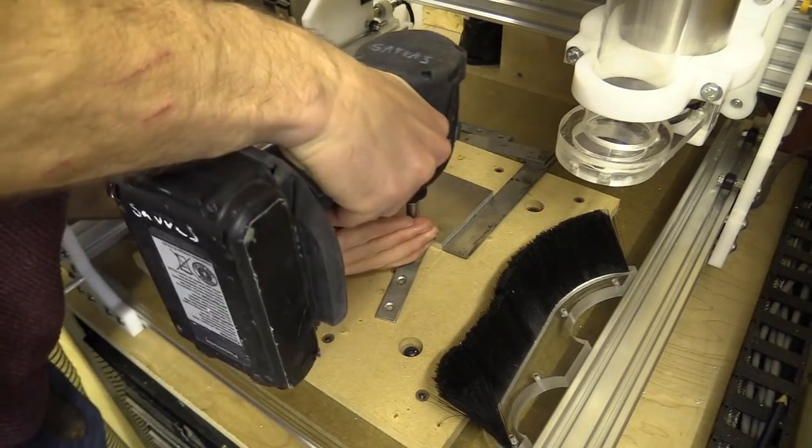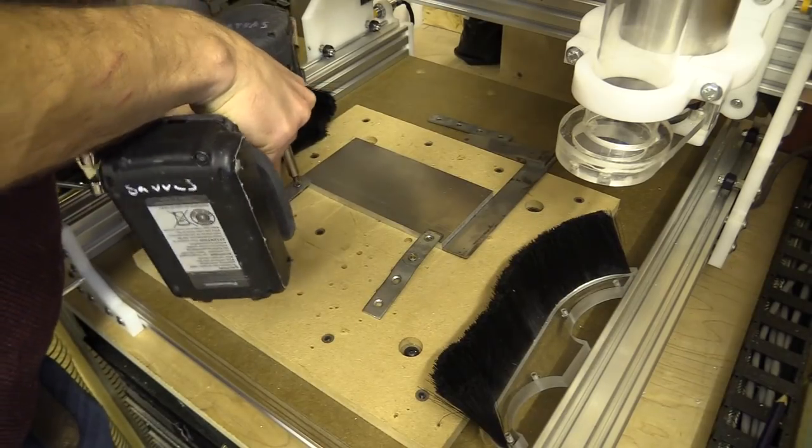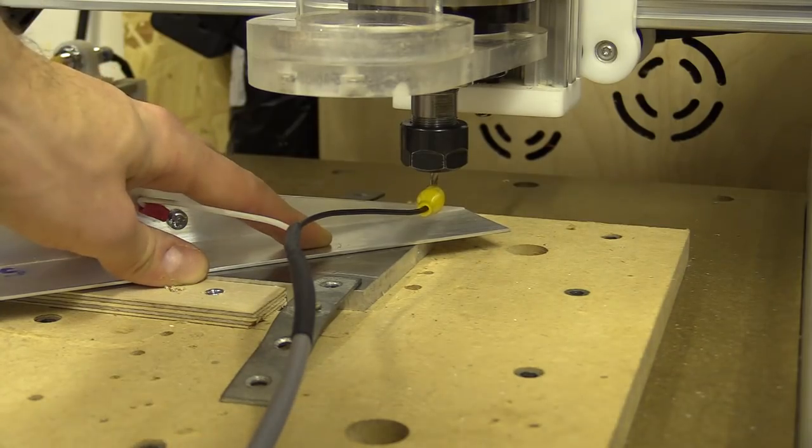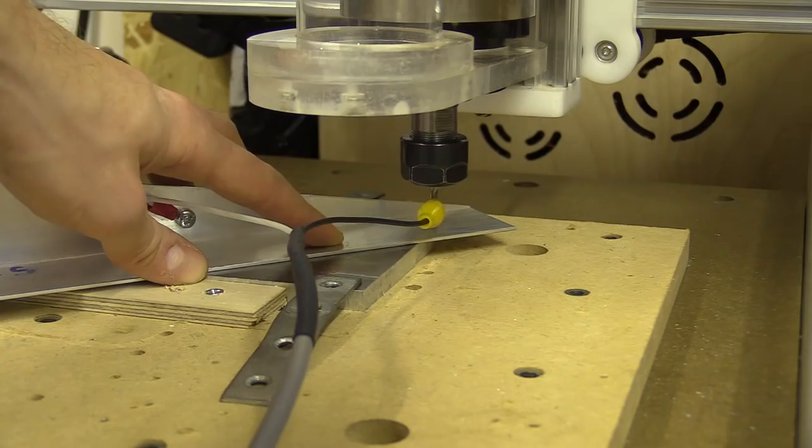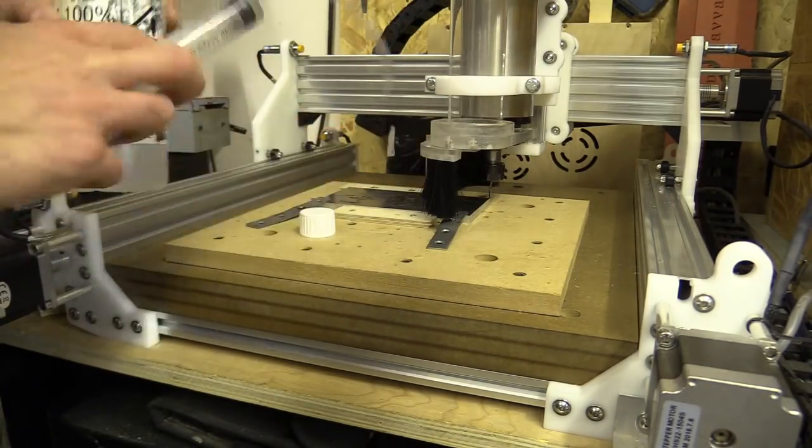I think what had happened was at some point the Y plate had reached their limit, which is only on one side, and as I don't have physical hard limits, while one side crashed into the proximity sensor, the opposite side kept going that little bit more.